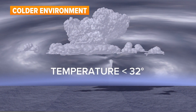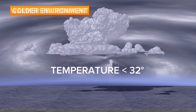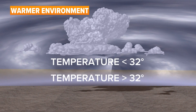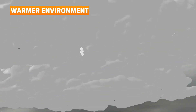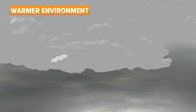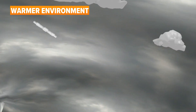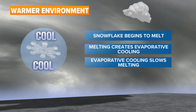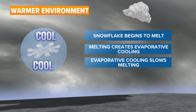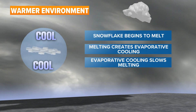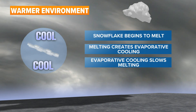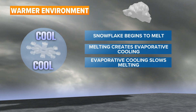Now things get more complicated when temperatures in the lowest levels of the atmosphere climb just above freezing. In this warmer environment, a snowflake falls from the cloud and stays frozen until it reaches that warmer layer near the surface. At that point, the snowflake begins to melt.